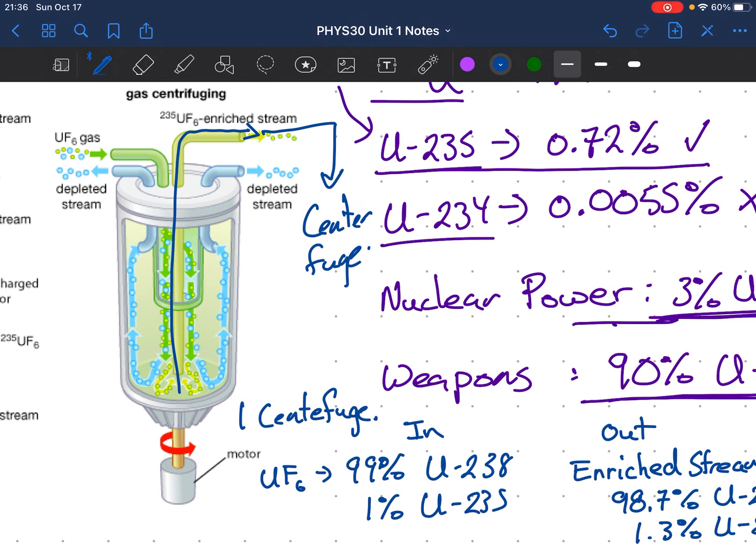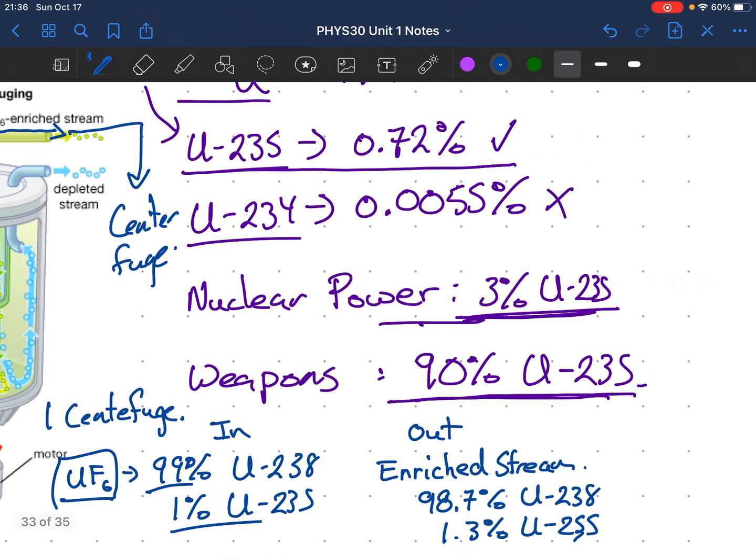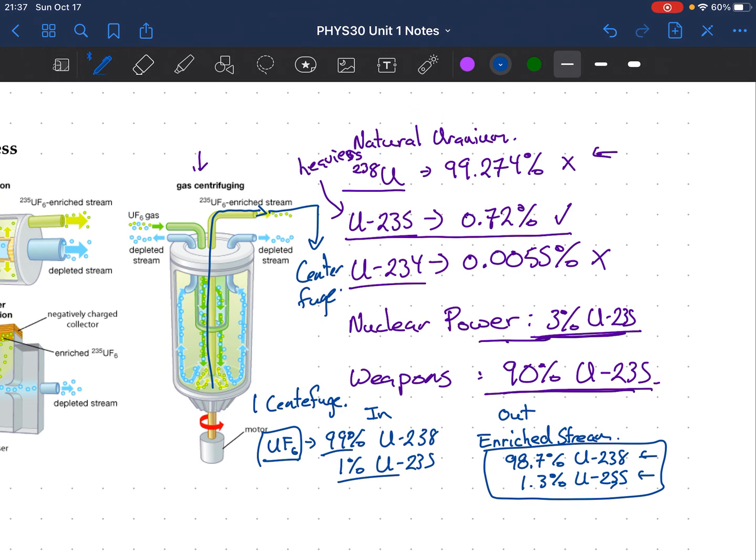All right, so these centrifuges are often used to enrich gas. So you get this uranium hexafluoride gas coming in, and it's mostly uranium-238 and a little bit uranium-235. Then the enriched stream comes out, still mostly uranium-238 and a little bit more uranium-235. Now you can see because of this, if you want to get to nuclear weapon grade, like 90% uranium-235, you might have to have thousands of these centrifuges going from one to the next to the next. And because they're very precise machines that spin very fast, they're very easy to break.